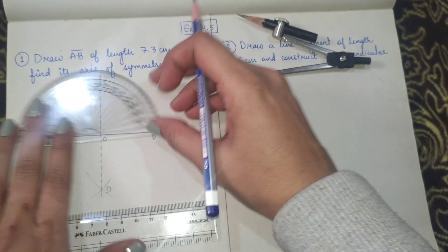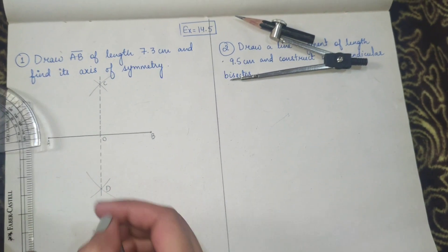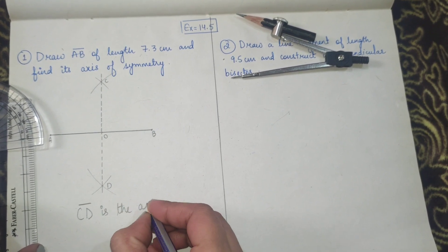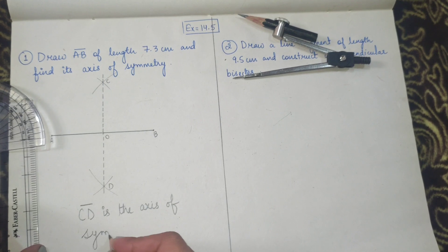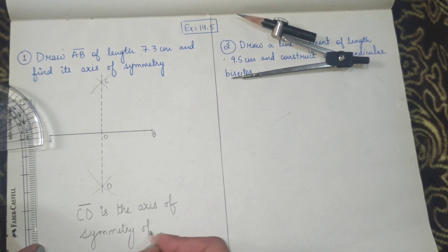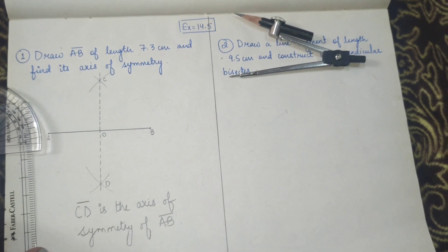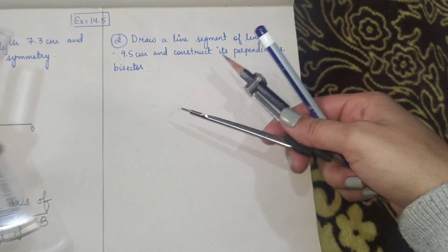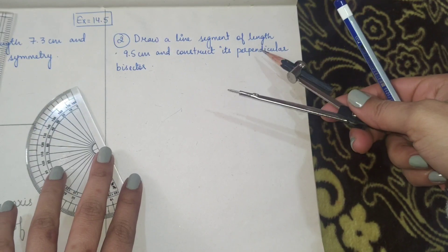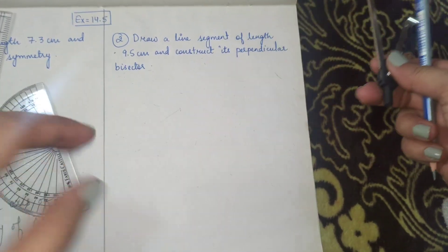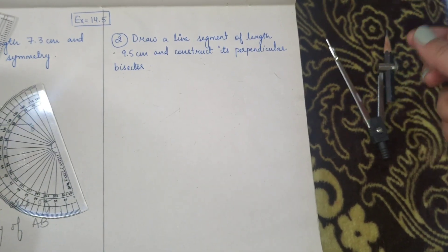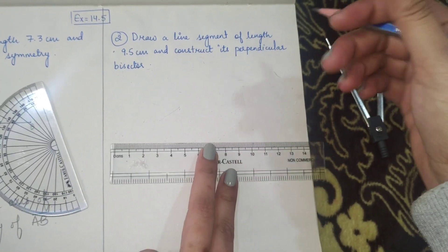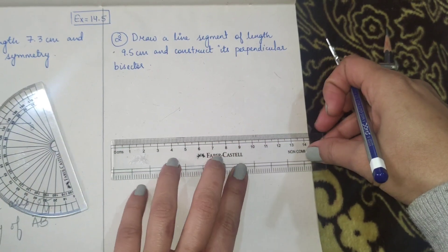So we have drawn an axis of symmetry. We write: CD is the axis of symmetry of line segment AB. That's how you do question one. Question two is similar, but they have used a different term - they have straight away asked you to construct a perpendicular bisector. First draw a line segment of length 9.5 centimeters and then repeat the same procedure.